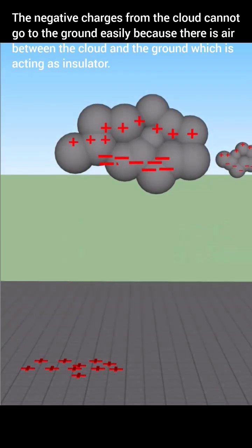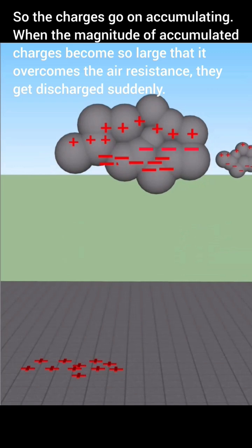The negative charges from the cloud cannot go to the ground easily because there is air between the cloud and the ground which is acting as an insulator. So the charges go on accumulating.